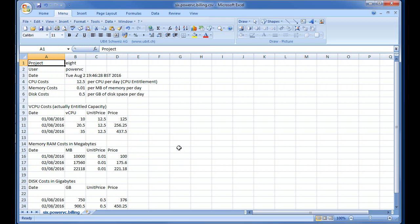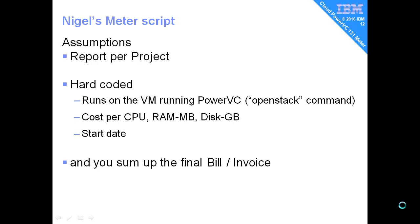Hopefully that will get you going — pulling in the data and billing your customers. The report that the meter script produces is per project. If you want to do per user, you'd have to change the script. It's also hard-coded in the script that it has to run on the PowerVC machine itself — the one that's running PowerVC as a service — because it's making use of the OpenStack command. It's also hard-coded in there the cost per CPU, RAM, and disk day, and the start date. But all of those you could change with an editor, no problem. Then it's going to assume that you pull that data into a spreadsheet to produce the bill or invoice — that's not automatic.